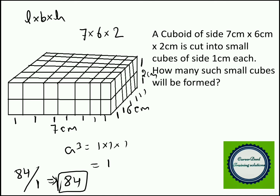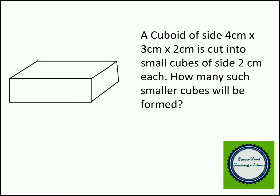Hope you understood the problem. Moving to the last question of the session. A cuboid of size 4 centimeters × 3 centimeters × 2 centimeters is cut into small cubes of size 2 centimeters each. How many smaller cubes will be formed? The most popular wrong answer for this question is 3 smaller cubes, because people apply volume of the biggest structure divided by volume of the smaller structure: 4×3×2 divided by 2×2×2, which gives 3. But that answer is wrong.